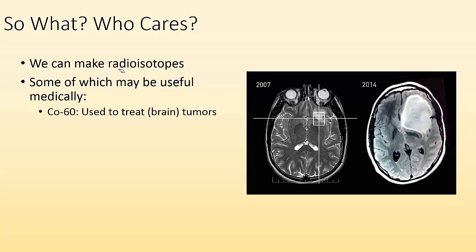some of them may be useful medically. We can make cobalt-60, which is used to treat brain tumors, right? Or we can make iodine-131, which is used to treat hyperthyroidism. So if we make these radioisotopes, we can use them for things like imaging or treatment. So that's why we should care.